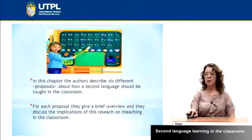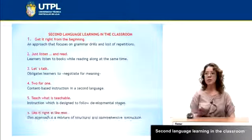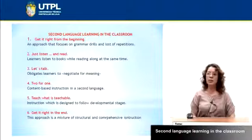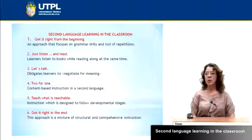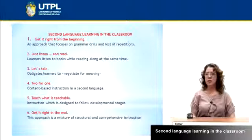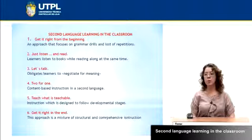Which are these six proposals? The first one is 'Get it right from the beginning.' The main characteristic of this proposal is that it focuses on grammar drills and lots of repetitions.